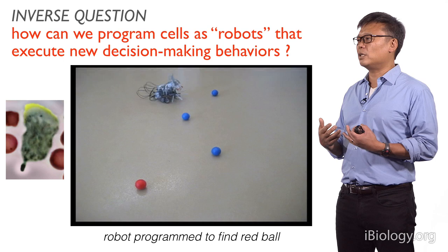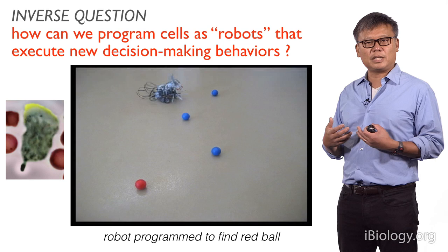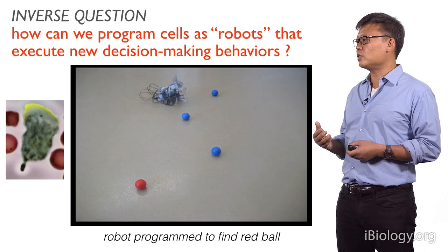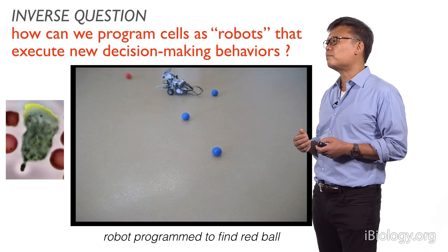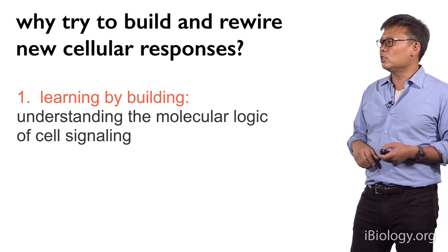Really, this is about asking the inverse question. Rather than trying to take apart a cell, we're asking: can we view cells as complex devices or robots that execute new decision-making behaviors? And can we learn how to program them? Much like this robot here, which was programmed to look for and search for red balls in a field of other blue balls.